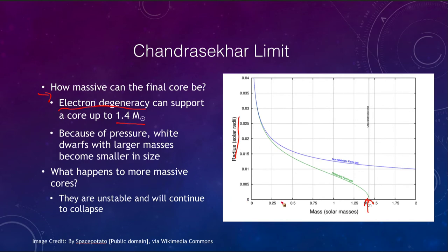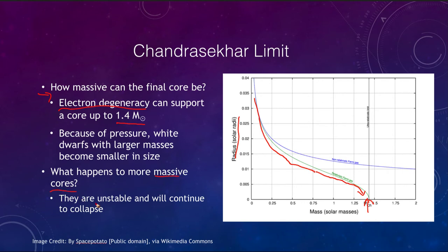Plotted here is the radius of the white dwarf versus its mass. Note how the radius gets smaller and smaller as you get more and more mass, following the green line. So even though a white dwarf can become more massive, it also becomes smaller. Typical solar-mass white dwarfs might be about the size of the Earth, but as you add more and more mass it crushes down smaller and smaller. More massive cores become unstable — they've exceeded the 1.4 solar mass limit and will continue to collapse further, as the electrons can no longer hold them up.